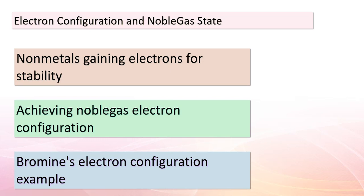Today, we're taking a closer look at electron configurations and the concept of achieving a noble gas state. Non-metals have a tendency to gain electrons in order to achieve stability, filling up their outermost occupied subshell to achieve what we call a noble gas electron configuration. For example, the bromine atom (atomic number 35) gains a single electron to complete its subshell, transforming into a bromide ion (Br⁻) with electron configuration 1s²2s²2p⁶3s²3p⁶4s²3d¹⁰4p⁶. This noble gas electron configuration provides stability. In the quest for stability, non-metals strive to mimic the noble gases by gaining electrons.